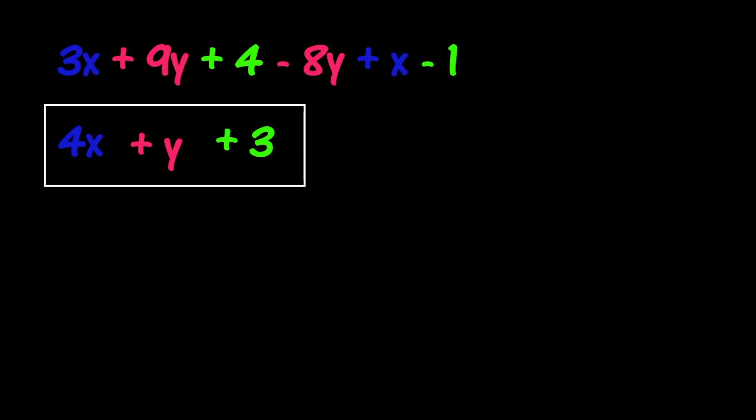Next up, we have 3x minus 9y plus 4 plus 8y plus x minus 1. As you can see, this expression is very similar to the one above. The only difference is that the signs on the y terms have been switched. Let's see what this does.